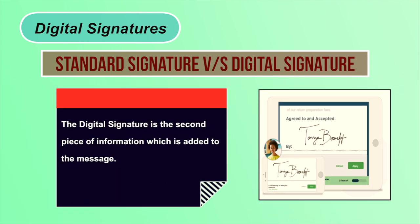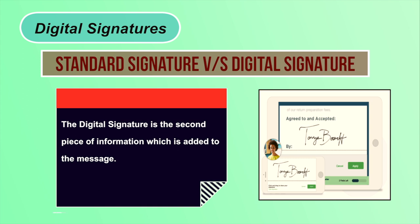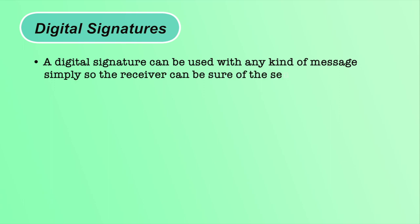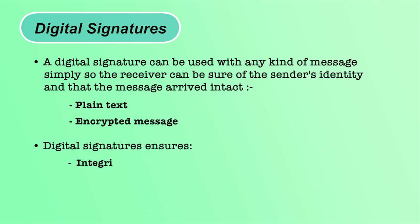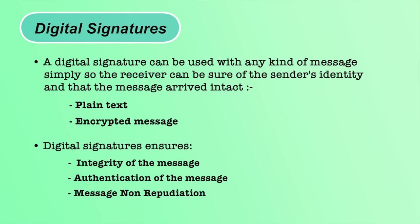The digital signature is a second piece of information added to the message. A digital signature can be used with any kind of message, whether encrypted or not, so the receiver can be sure of the sender's identity and that the message has not been changed. Digital signatures make it difficult for the signer to deny having signed something — assuming their private key has not been compromised. As the digital signature is unique to both the document and the signer, this property is called non-repudiation.